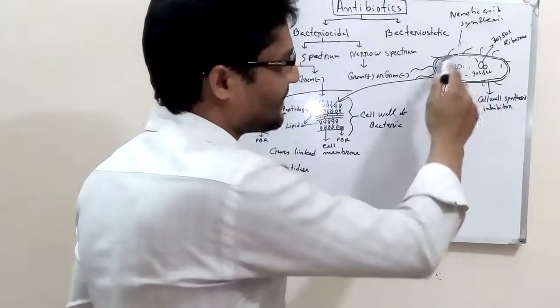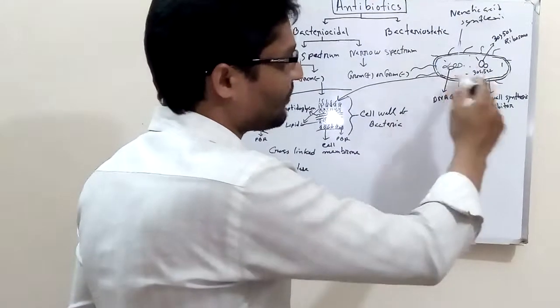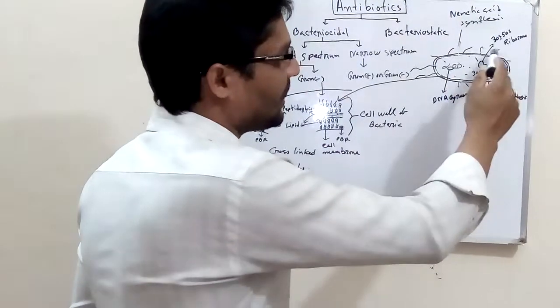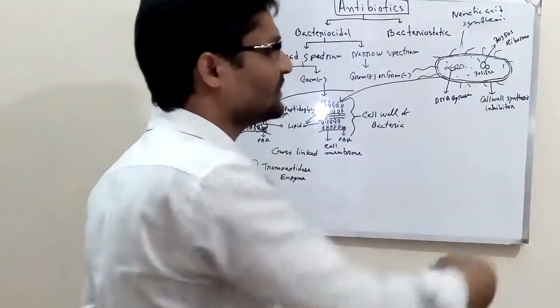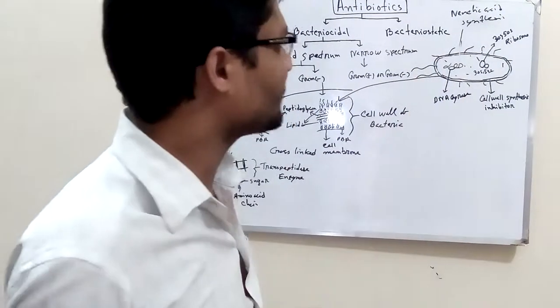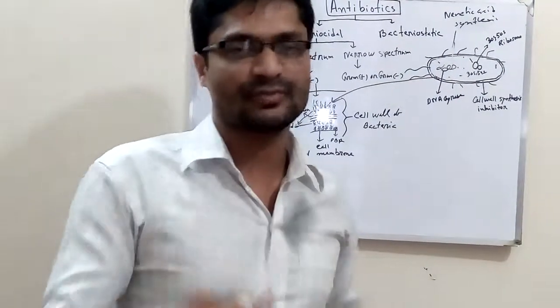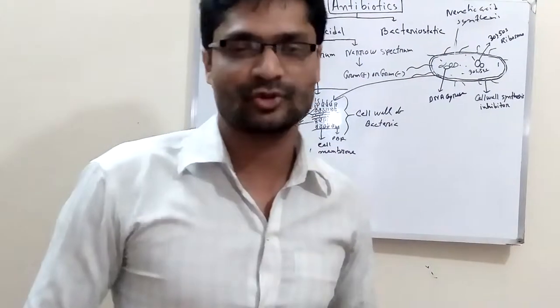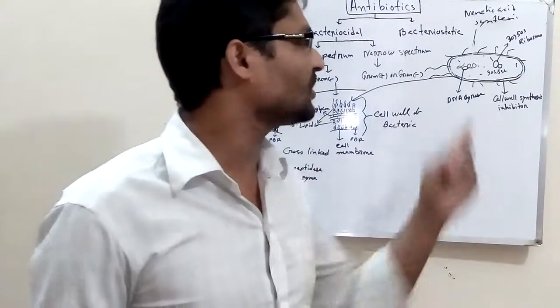The bacterial cell structure includes the cell wall, cell membrane, ribosomes, cytoplasm, amino acids, and nucleic acid. Understanding the bacterial cell is very important when managing and classifying antibiotics.